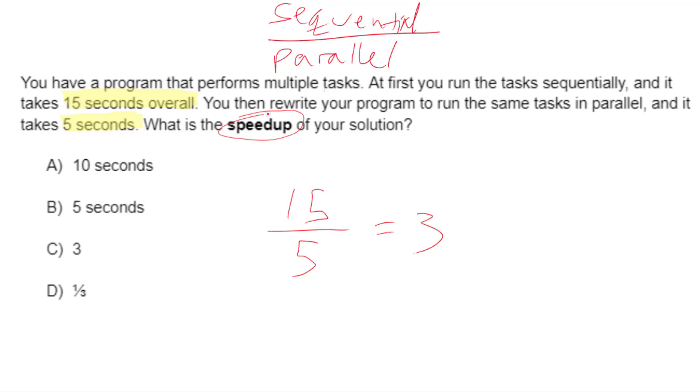So a lot of people will inadvertently try to subtract these. They'll say, oh, the speedup is how many more seconds you get. So they'll think that the answer is A, but it's not. The answer is actually the ratio. It's by how much proportionally do you improve your solution? And the answer to that is 3. Just remember that, sequential divided by parallel, that's your speedup.